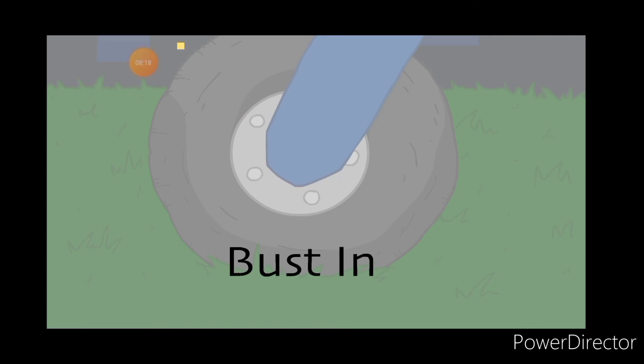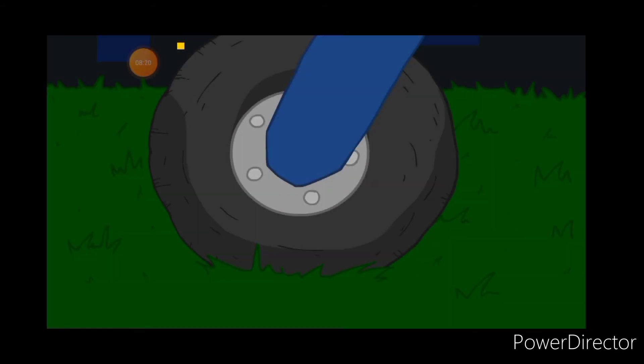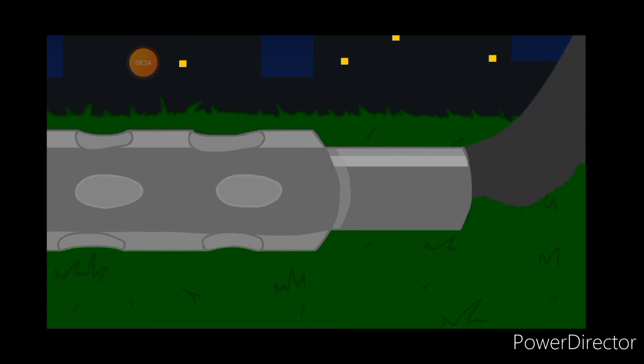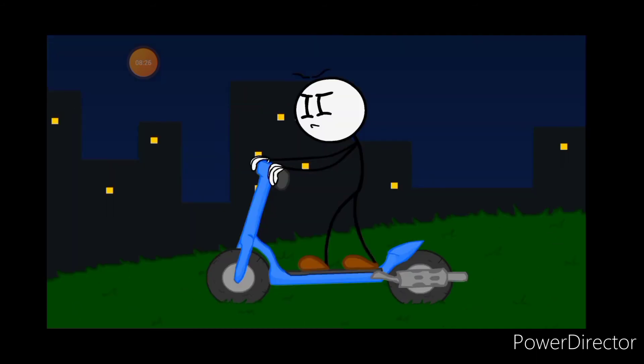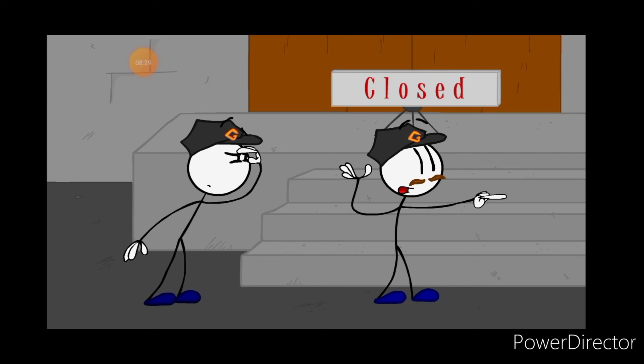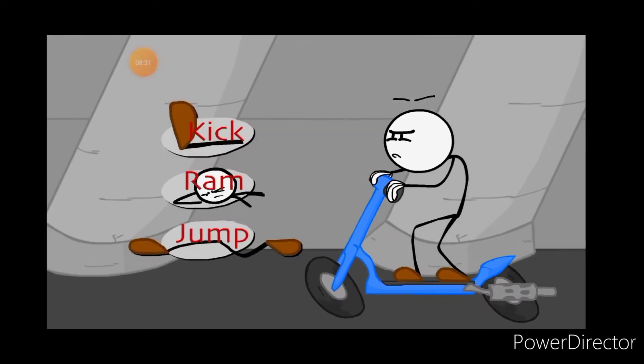Bust in. Ooh, an electric scooter. I own one of them. FBI open up. Where's his helmet? You need a helmet on. Go to the mass.